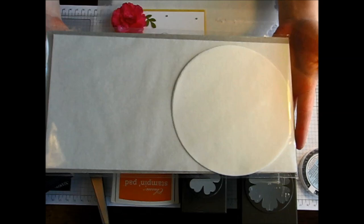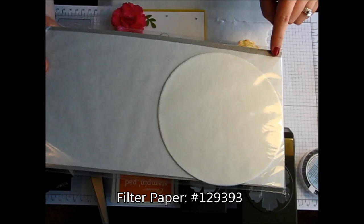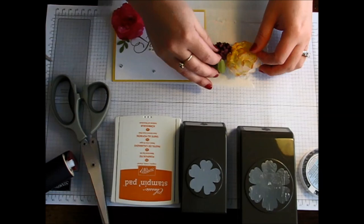It comes in a package just like this. There's some 6 inch circles in there and also the 6 by 12 rectangle pieces that you see here.